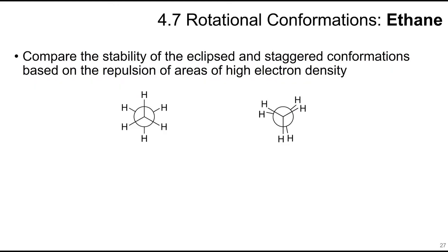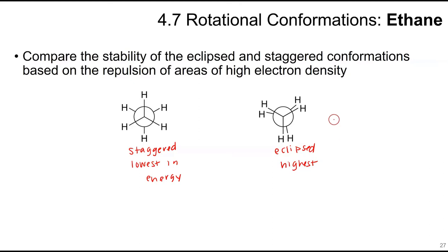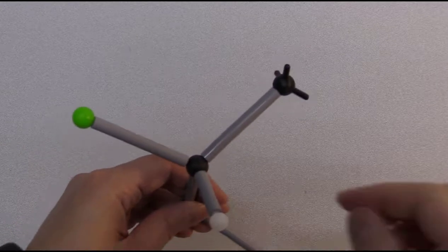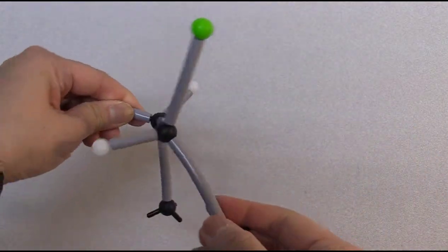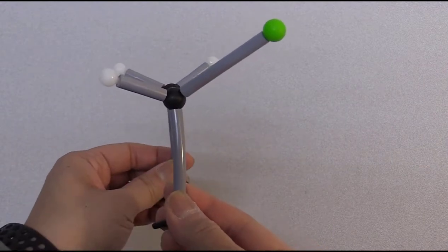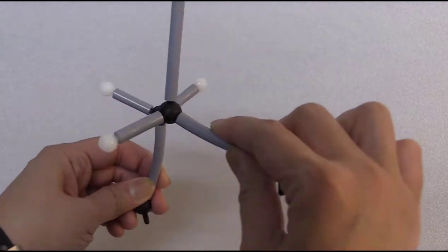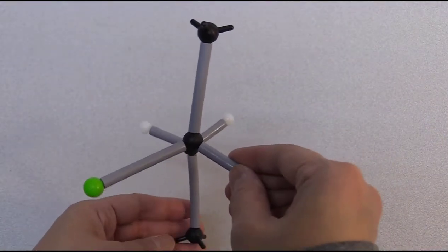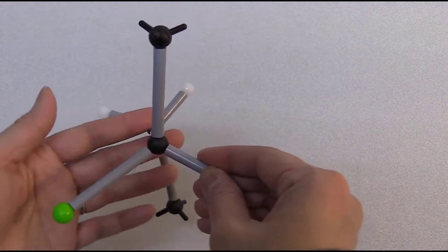Comparing eclipsed and staggered conformations: in the staggered conformation all groups have their own 'window' and are not overlapping — this is the lowest energy conformation. In the eclipsed conformation, groups on the front and back carbons line up behind each other, which is the highest energy conformation due to repulsion. In the chlorine example, staggered means the groups are opposite each other; eclipsed means the front carbon covers the back.